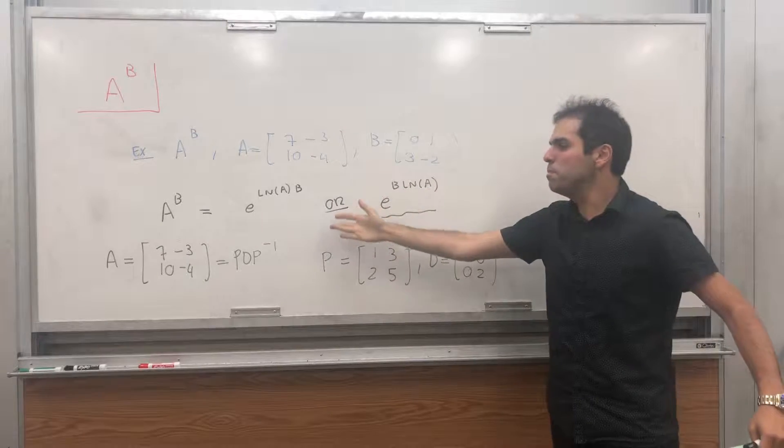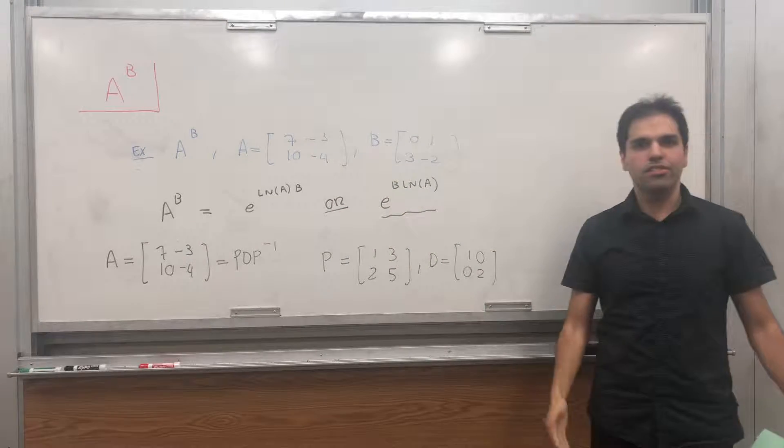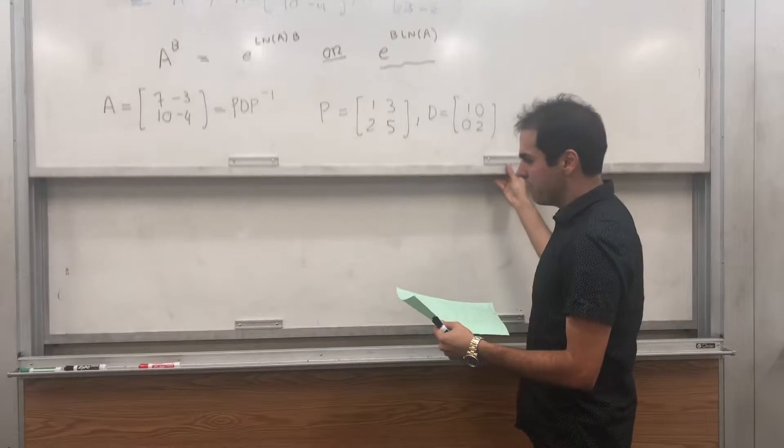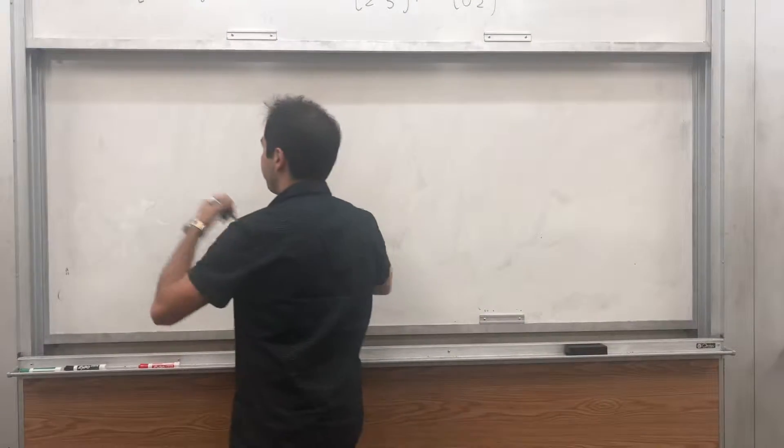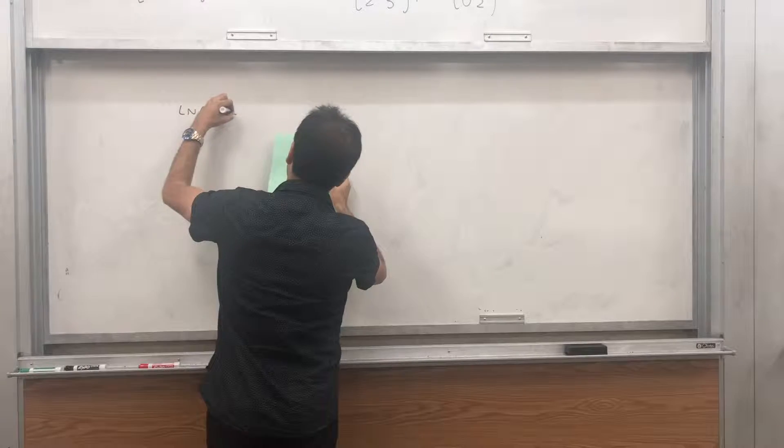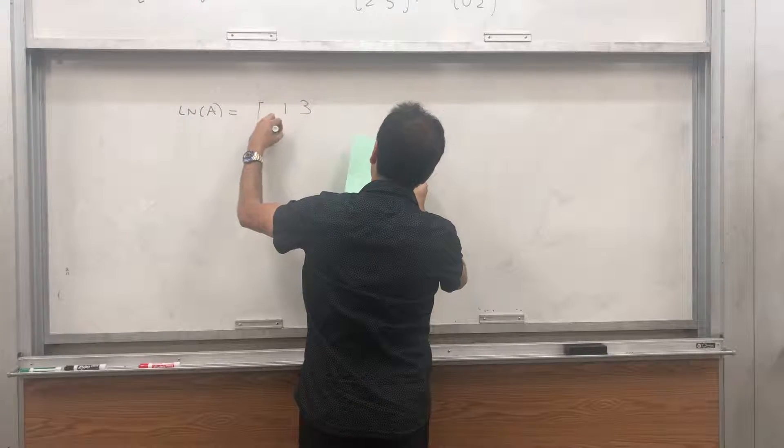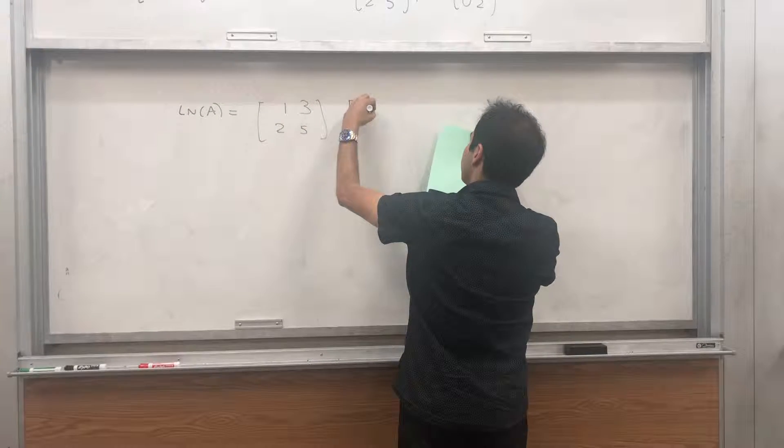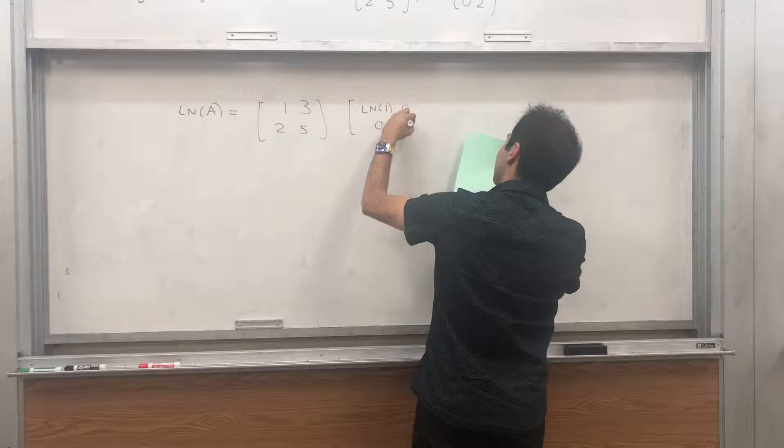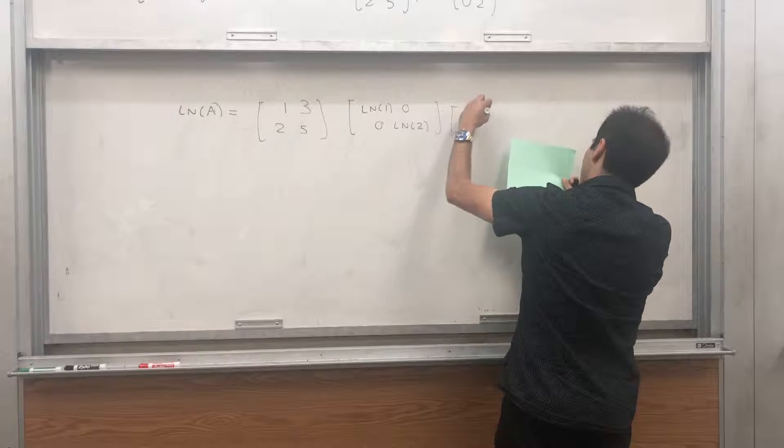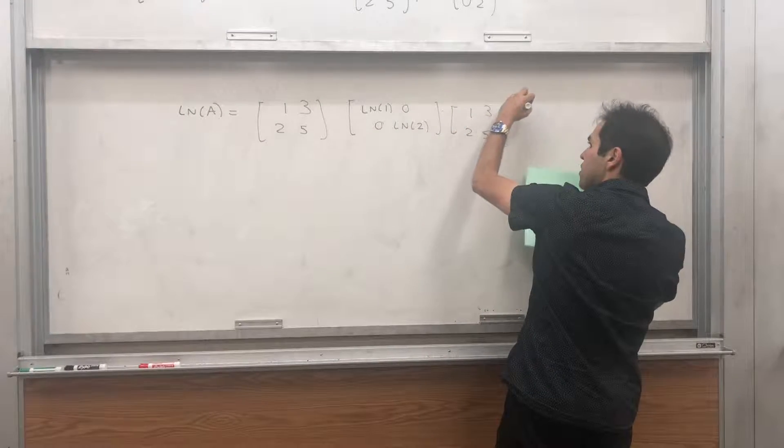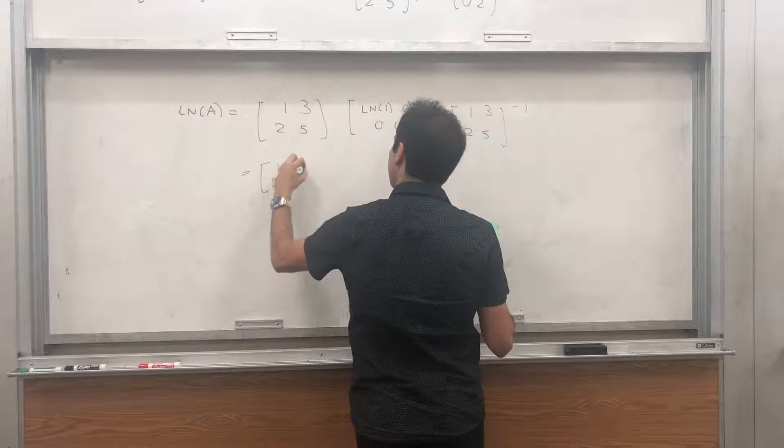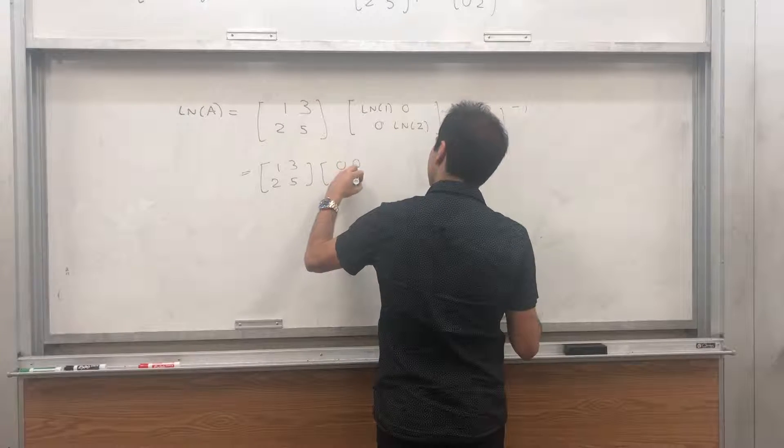In particular, just by heuristic reasoning, you might guess, well, ln of A should be P ln of D P inverse. And, since there's no good definition of ln of A here, well, we can actually use this. So, then, what is ln of A? That becomes, again, P, which is 1, 3, 2, 5. And, ln of D, so ln of 1, 0, 0, ln of 2. And, 1, 3, 2, 5 inverse. And, the reason this is nice, ln of 1 is 0, so really get 1, 3, 2, 5, 0, 0, 0, ln of 2.